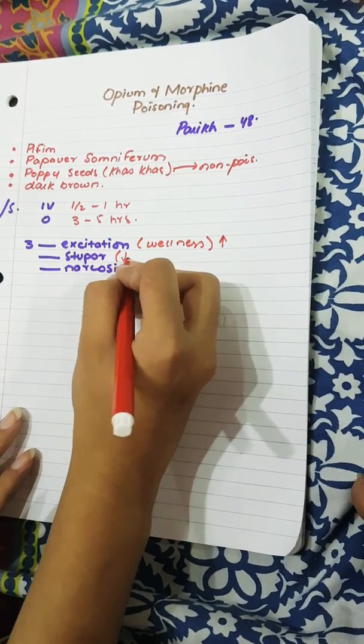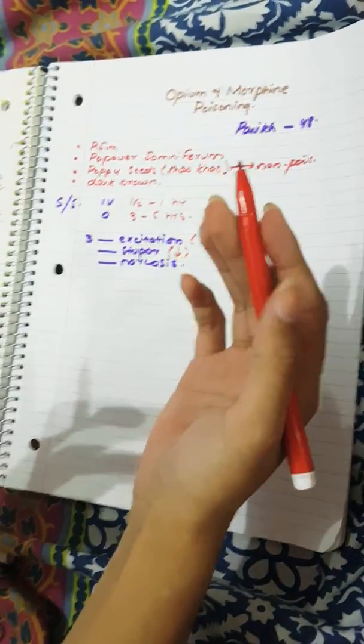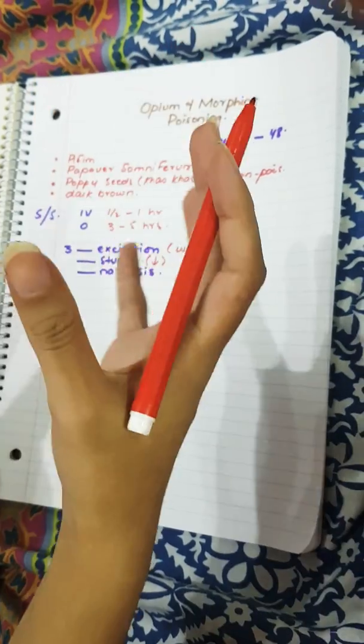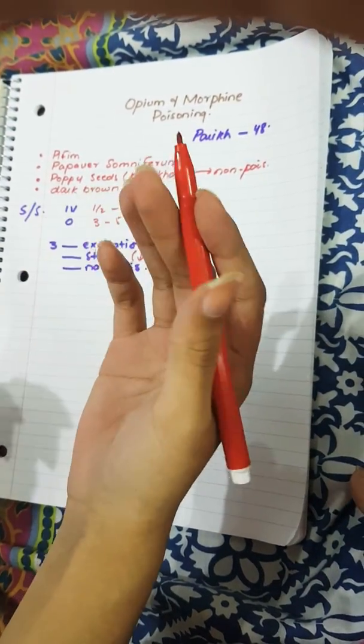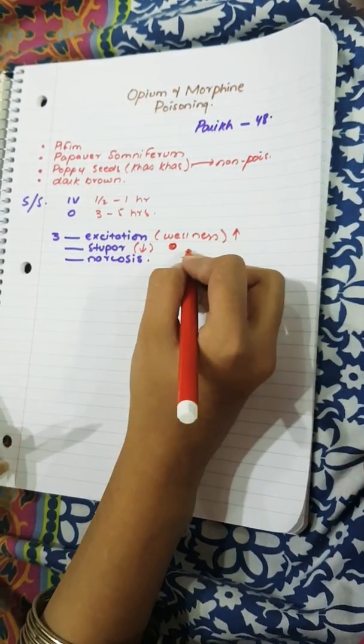Then there is stupor. In this, everything is decreased. For example, there would be weariness, feeling of fatigue, headache, diminished sensibility, there would be weight in limbs, and pupils will be contracted. Pupils are contracted - this is a main point. And there will be cyanosis.